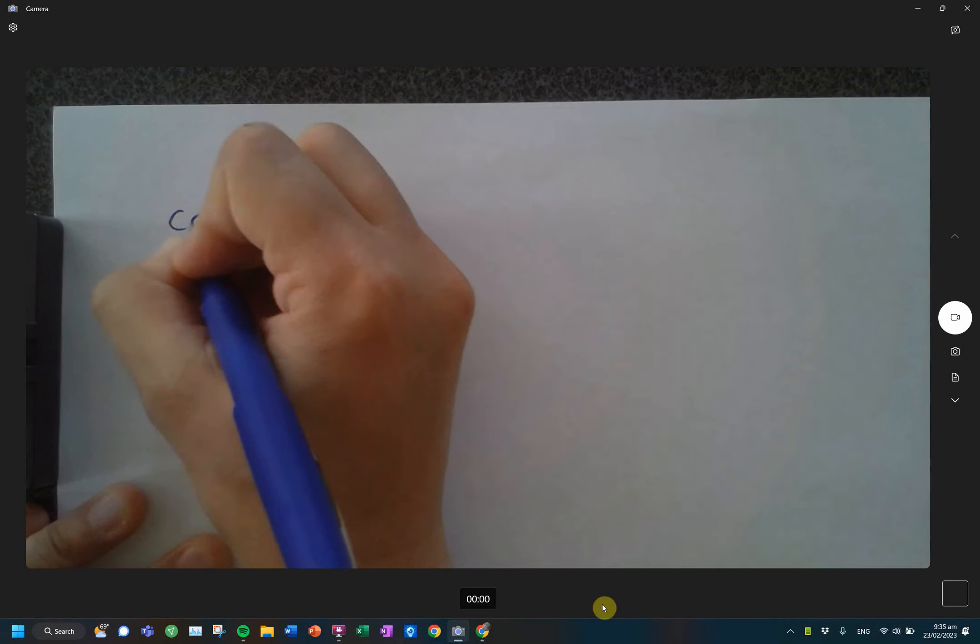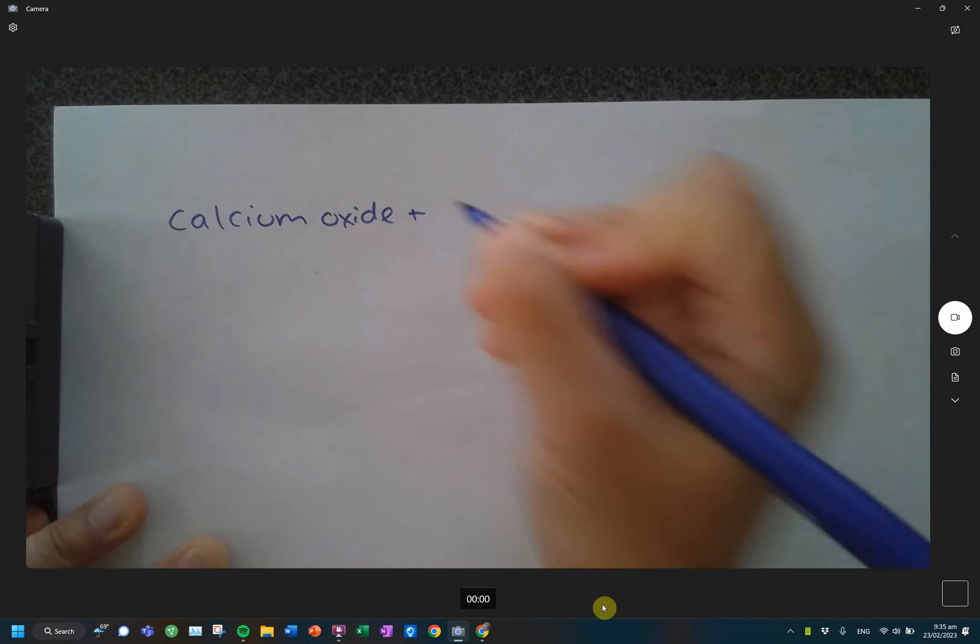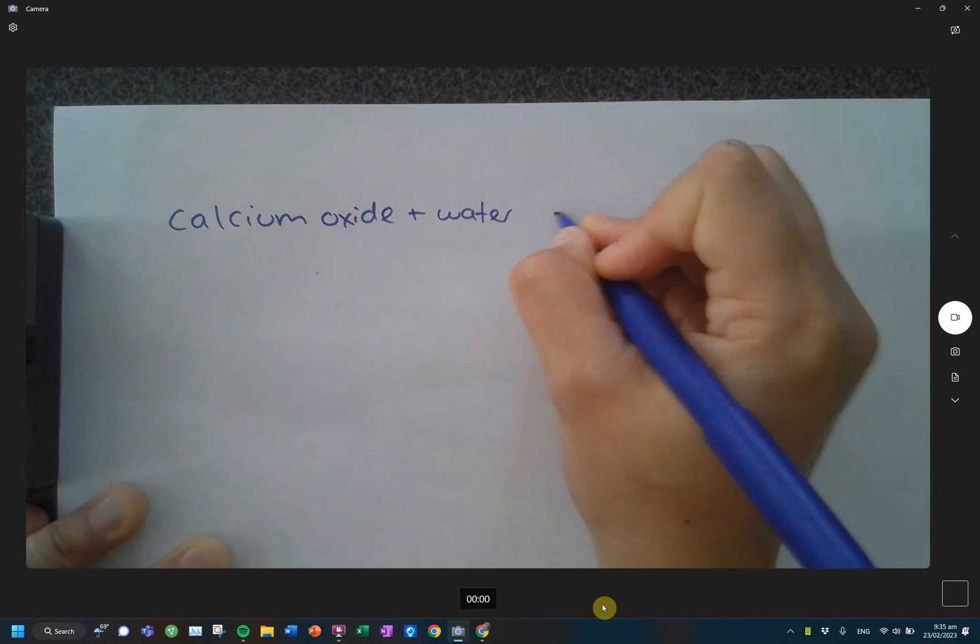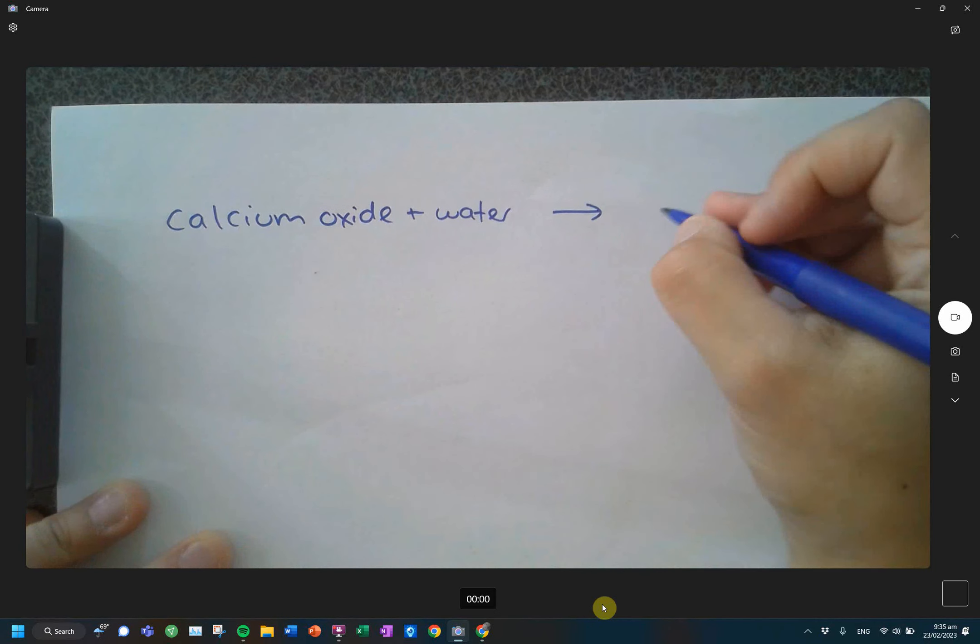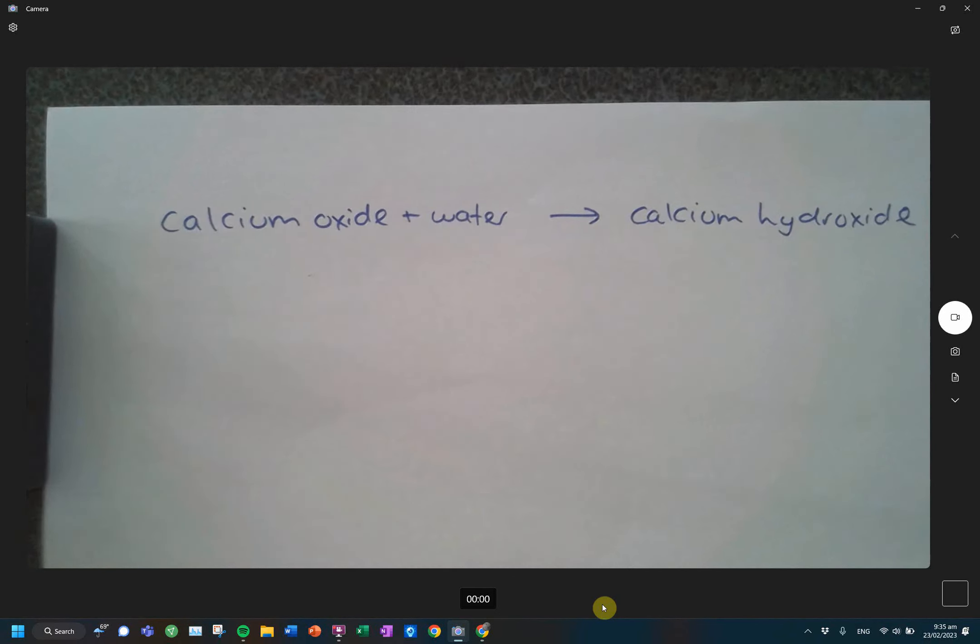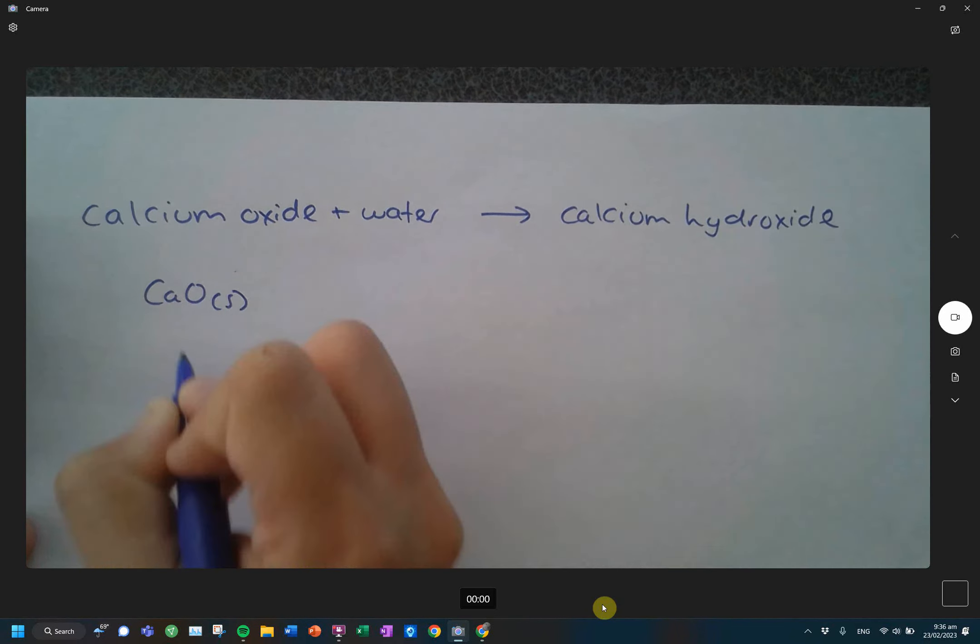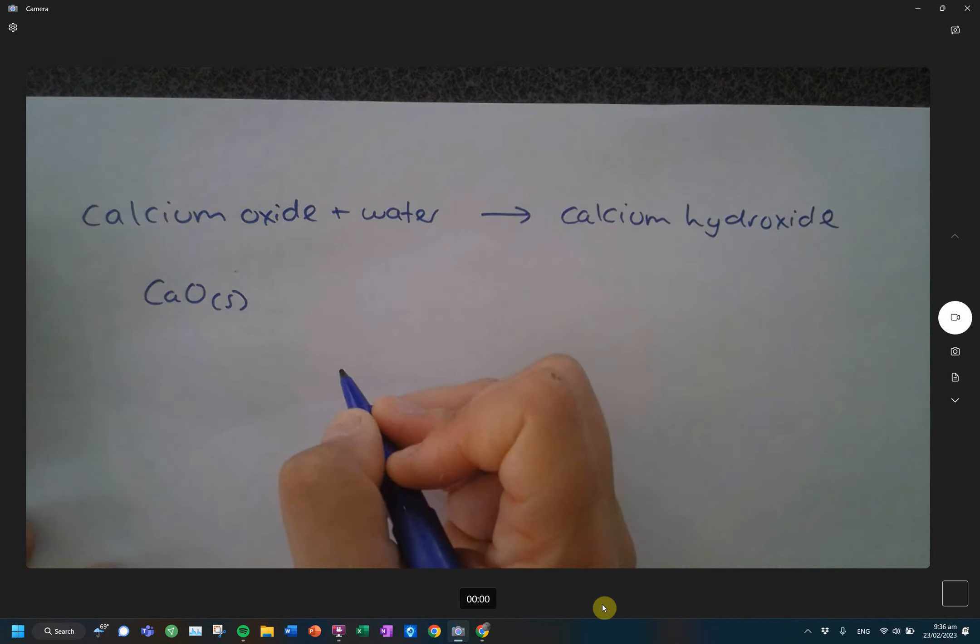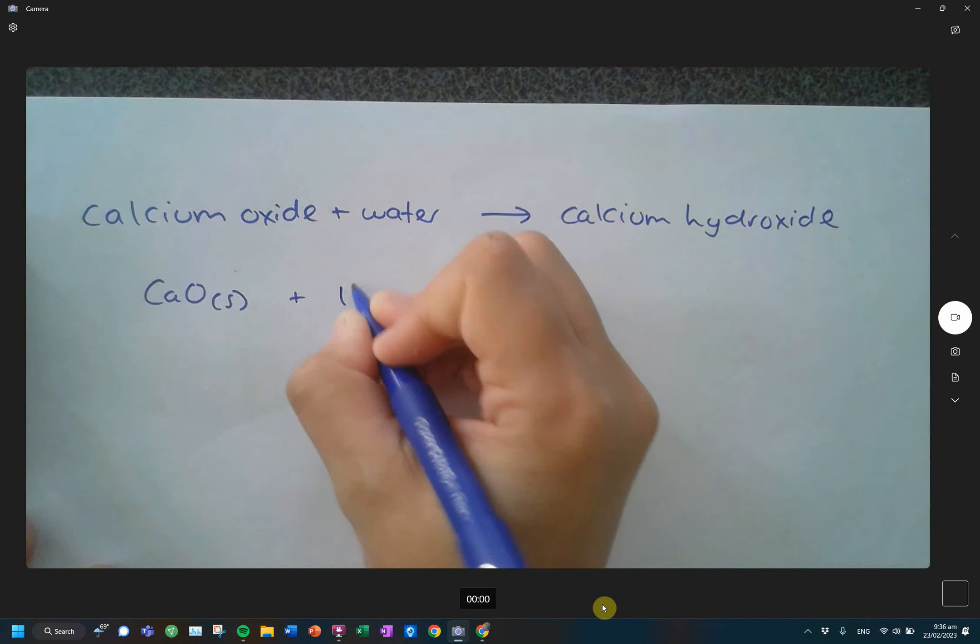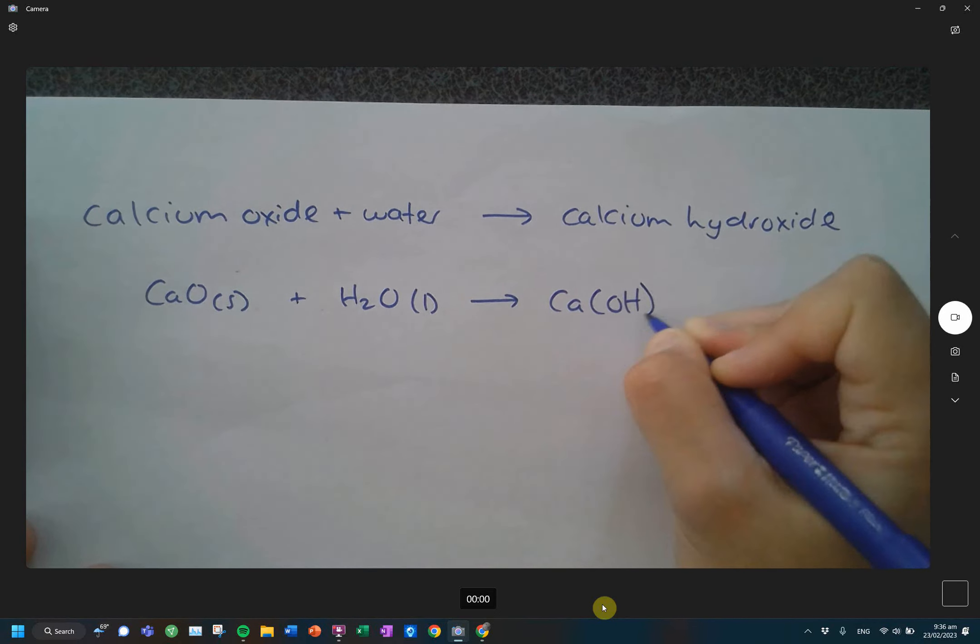Calcium oxide plus water makes calcium hydroxide. The other thing I did was I wrote down the symbolic equation as well just to help us out. So that's CaO. That little S there refers to solid. I'm going over the new now. Plus water, which is a liquid, makes my calcium hydroxide, which is a solid.